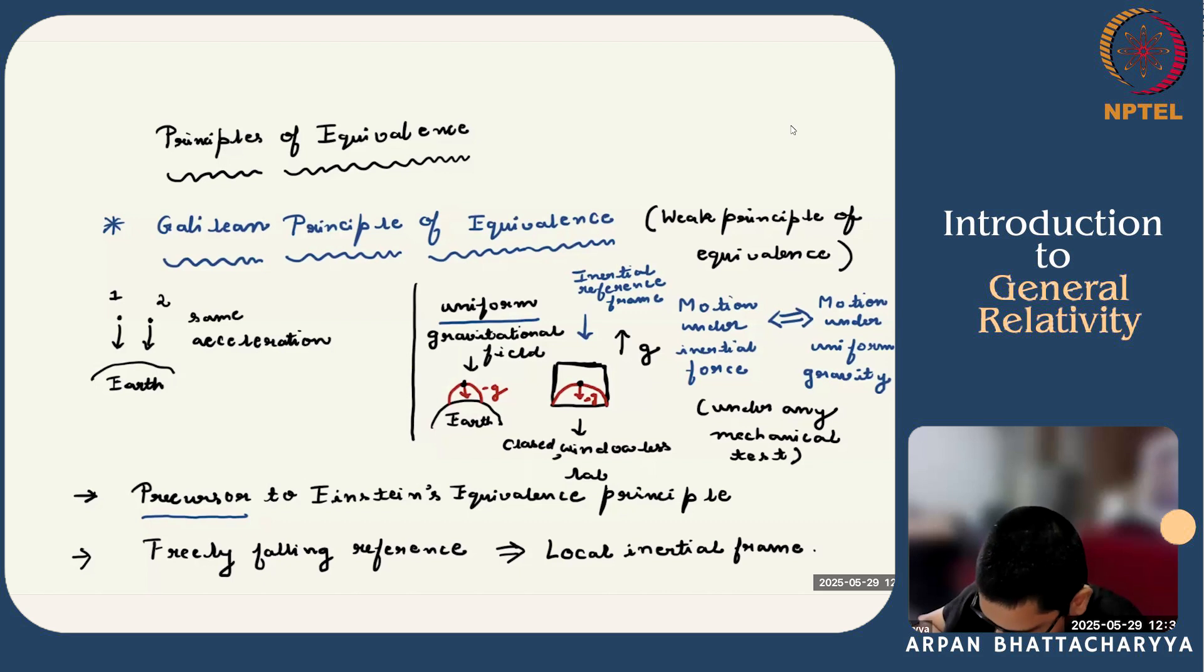Now this Galilean principle of equivalence is a precursor to Einstein's equivalence principle, where he generalizes this statement for any kind of test, be it electrical, mechanical, optical, and under any kind of test, this equivalence holds. More precisely, if you have a freely falling frame or lab inside a uniform gravitational field, then the laws will be identical to the laws of special relativity in an inertial reference frame. And that actually helps us to define or identify this freely falling frame as a local inertial frame.